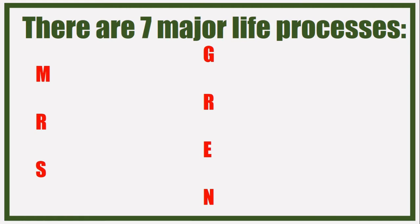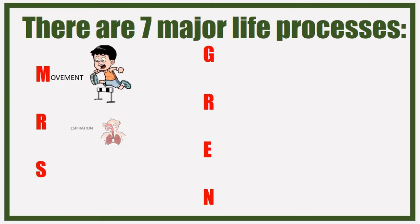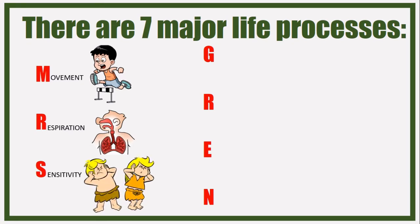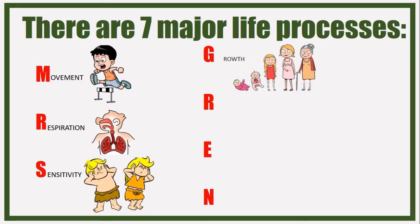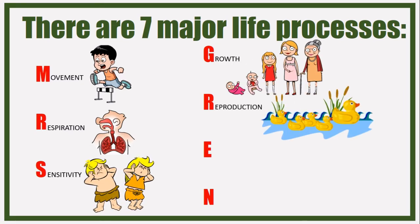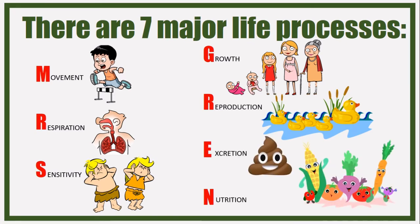Nerg or Mrs. Gren - you'd have gone over this at least a thousand times in primary. M is for movement, R for respiration, S for sensitivity, G for growth, second R for reproduction, E for excretion, and N for nutrition. These life processes occur in every single living organism.